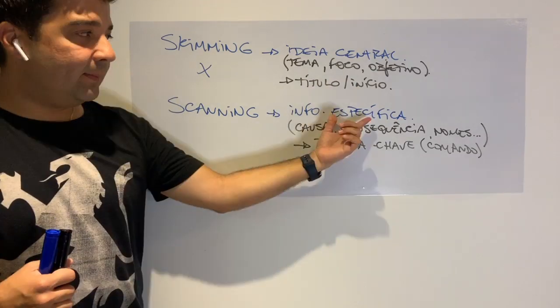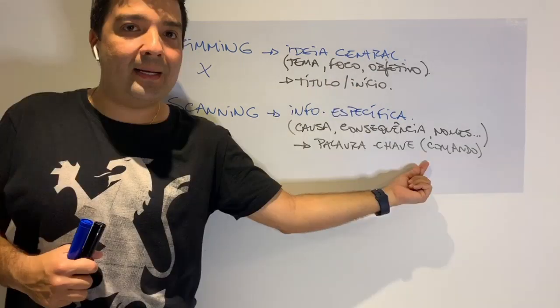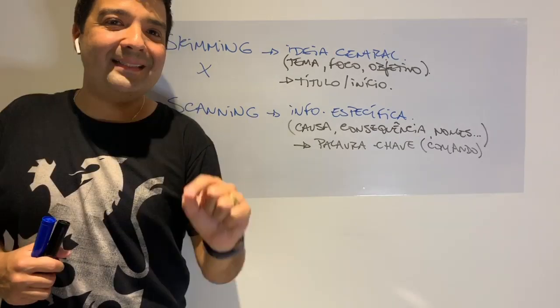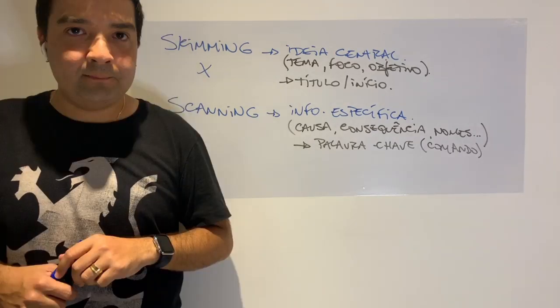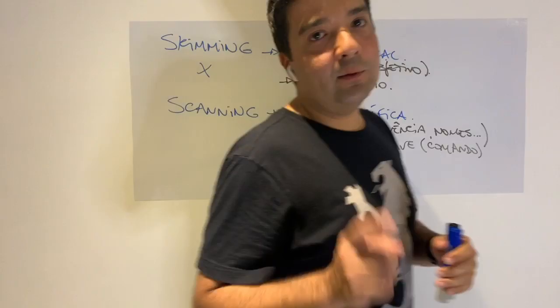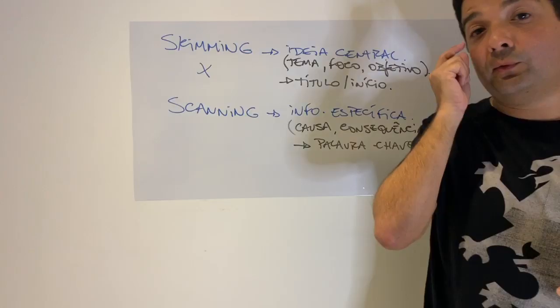O que é que ele quer? Ele quer ideia central ou informação específica? Se quer ideia central, você busca no título ou no início do texto. Se é uma informação específica, grave qual é a palavra-chave e vá para o texto diretamente olhando por essa palavra-chave. Beleza? Está claro? Eu vou começar a conversar sobre as questões todas com vocês.